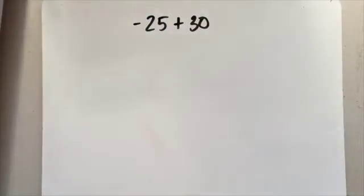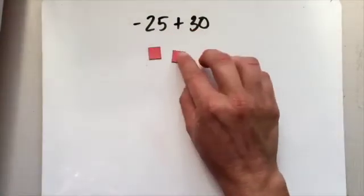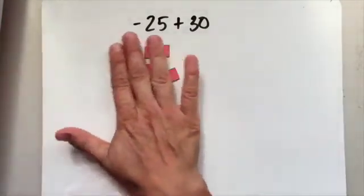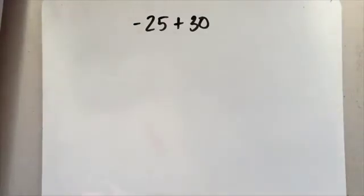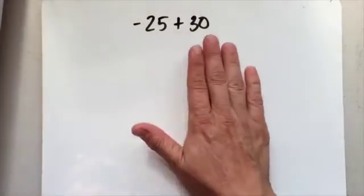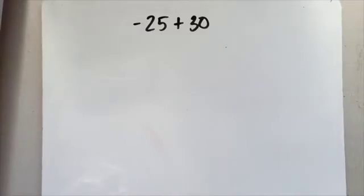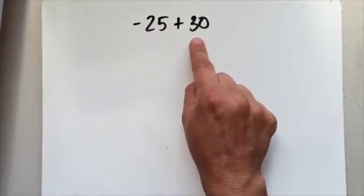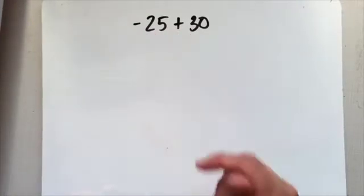All right. Give this one a try. Negative 25 plus 30. Did anybody count out 25 negative tiles here? Ridiculous. I don't even think I have that many. We don't have time for that. So algebra tiles doesn't work with everything. But that's okay. Because even if I don't have time to count out 25 red tiles and 30 yellow tiles, I can imagine them.